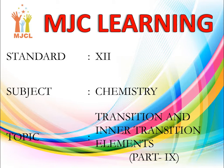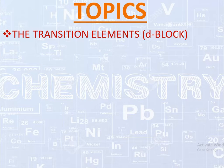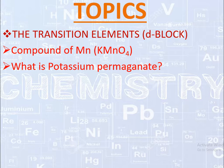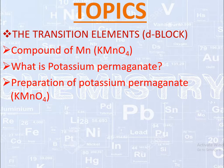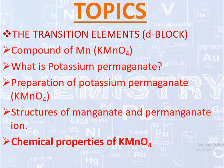Welcome back to MJC Learning. Today we are going to continue our 8th chapter of Chemistry, Transition and Inner Transition Elements. In the topic of compounds of transition elements, also known as D-block elements, we have studied about compounds of manganese — Potassium Permanganate KMnO4 — its preparation and structure of manganate and permanganate ions. Now in this video we will learn more about the chemical properties of KMnO4.